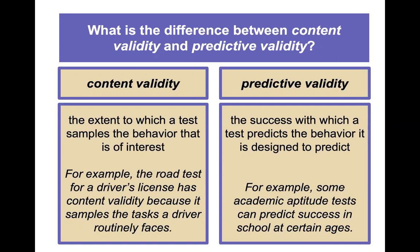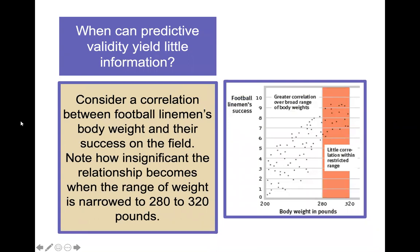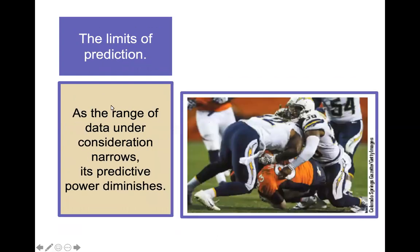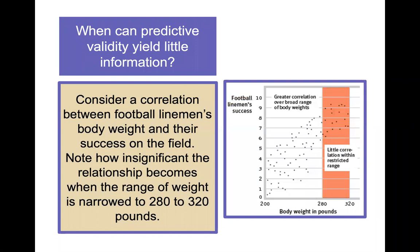Predictive validity can yield little information when the range of scores is restricted. Consider correlating football linemen's body weight with success on the field — the relationship becomes insignificant when you narrow the weight range to 280–320 pounds. As the range of data narrows, predictive power diminishes. This is similar to what happens with SAT scores when only a restricted range is considered.